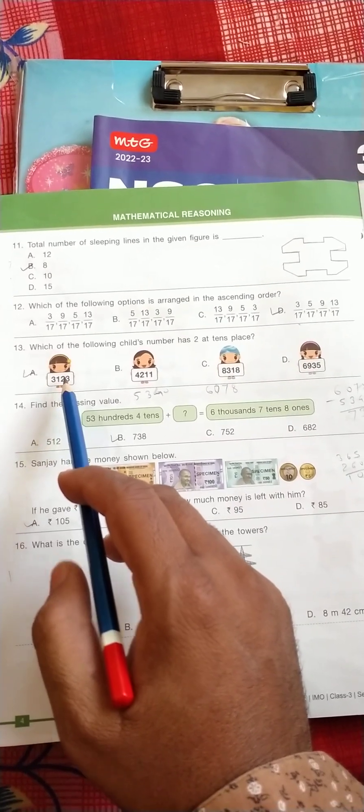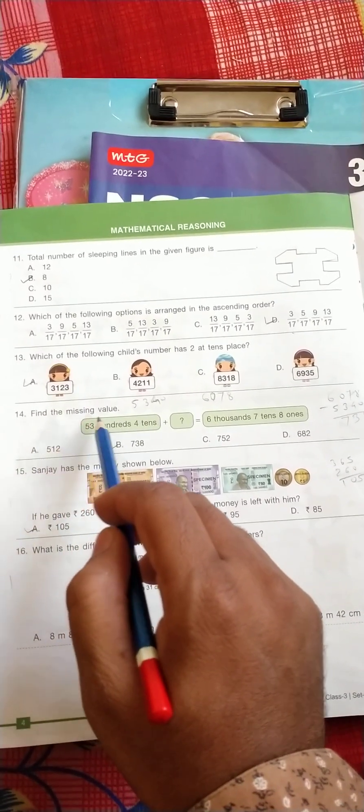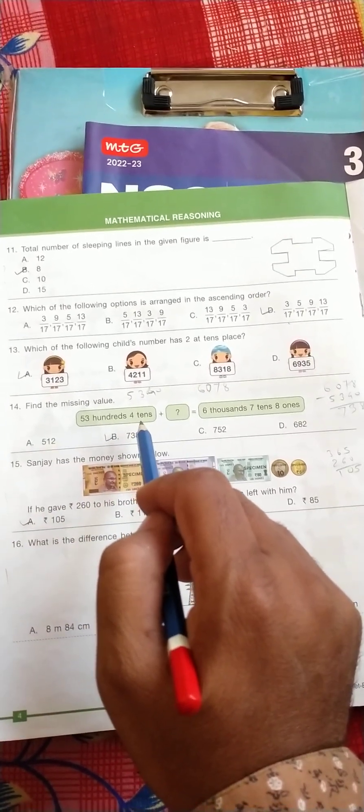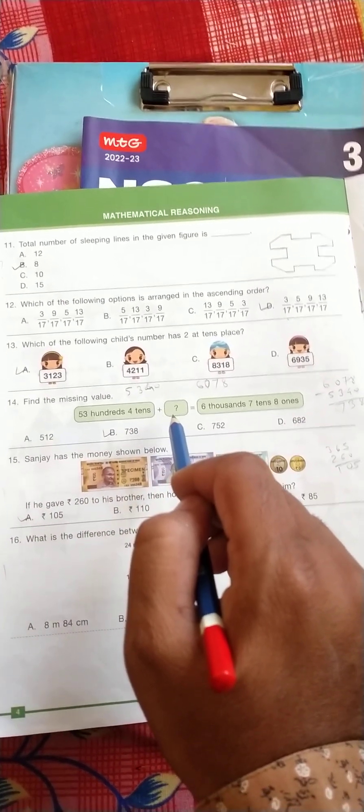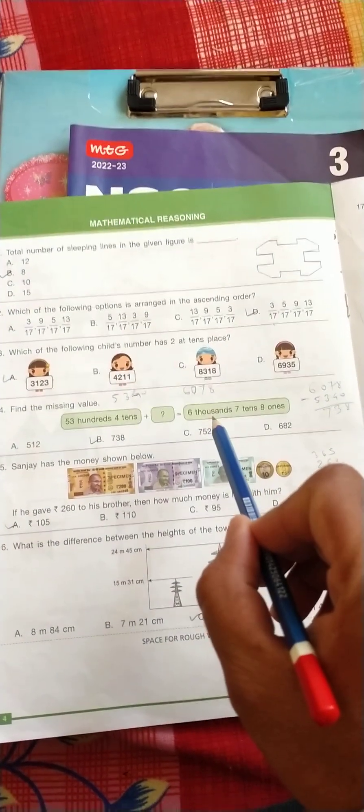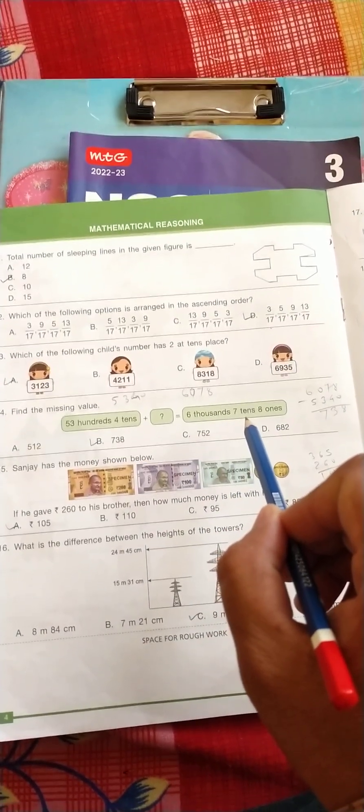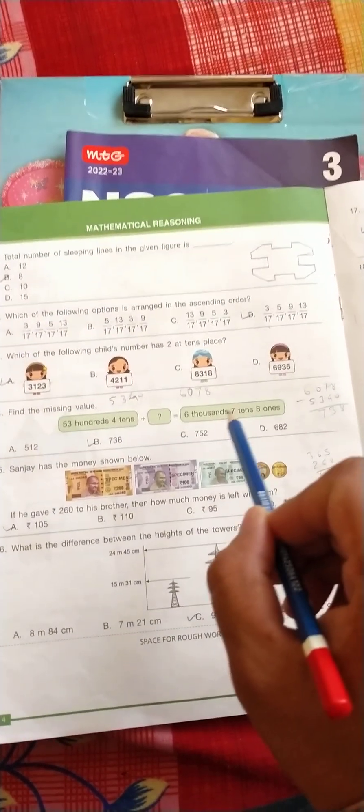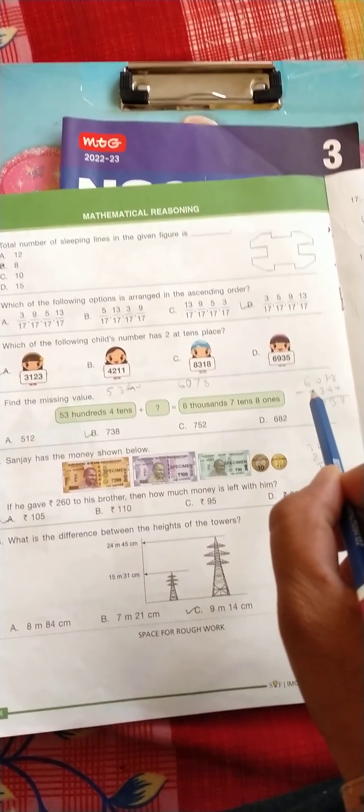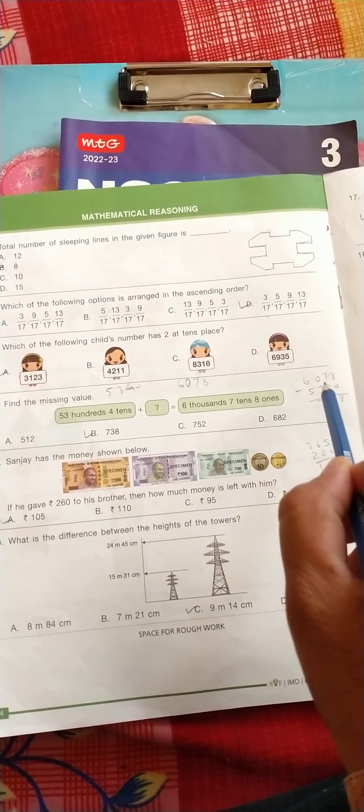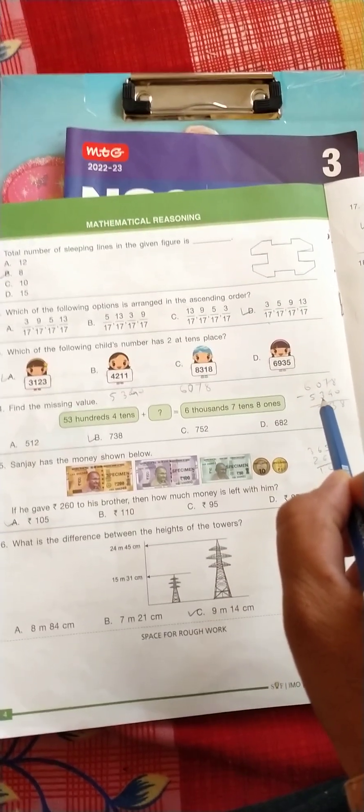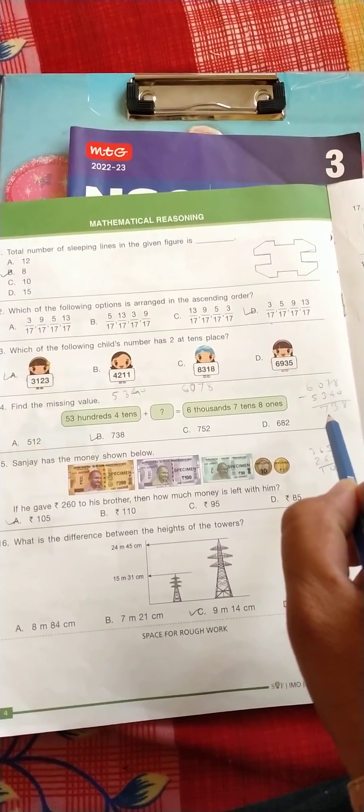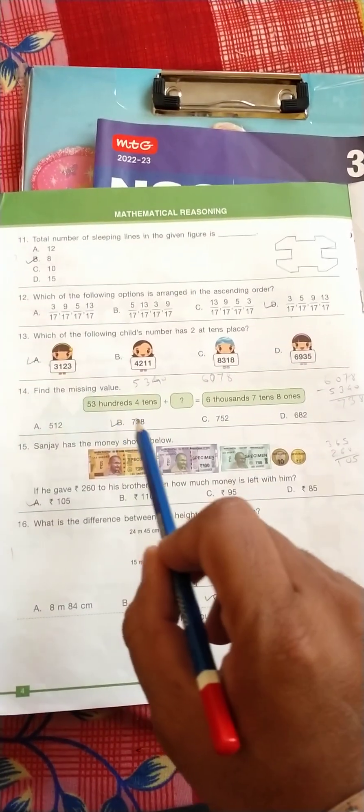Find the missing value: 5300 and 4 tens plus question mark is equal to 607 tens and 8 ones. So just we can minus here, 6078 minus 5340, so the answer is 738. So the answer is B.